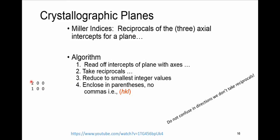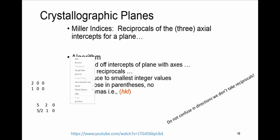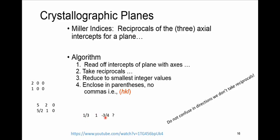For the reduction step: if reciprocals give 2, 0, 0 — dividing by 2 yields 1, 0, 0, the smallest integers. But if values are 1, 5, 2, 0 — dividing by 2 makes the first value non-integer, so we leave it as is. Another example with values 1/3, 1, and -3/4 — how to convert to smallest integers — is your task to work out in class. More examples and directions can be found in the provided link.